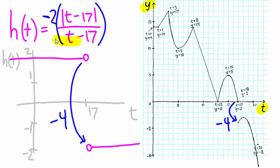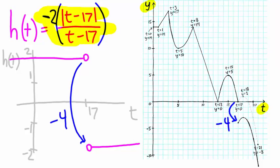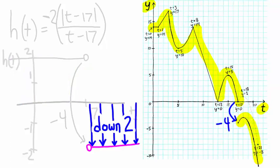Now if I add this expression into our y of t equation, what it's going to do is move this section of the graph two units upward, positive two, and it's going to move this section of the graph two units downward.